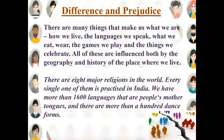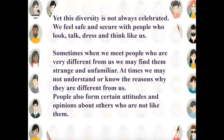There are many things which make us what we are today — the kind of people we meet, the kind of life we live, the language we speak, the clothes we wear, the games we play. All of these describe what we are as a person. There are eight major religions practiced in the world, and every single religion is present and practiced in India, with more than 1600 languages as mother tongue and over 100 forms of dance. Yet this diversity is not always celebrated. We always feel safe and secure around people who look, talk, and dress like us.